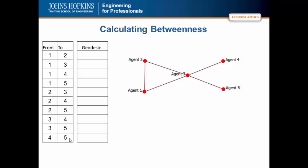The next step is to calculate the geodesic. So the geodesic is a term that refers to the shortest path between agents. You will recall in our terminology lecture that a path is a walk through the network where nodes and links are distinct. Geodesic is one step more restrictive in that it is not only a path in the network but the shortest path.